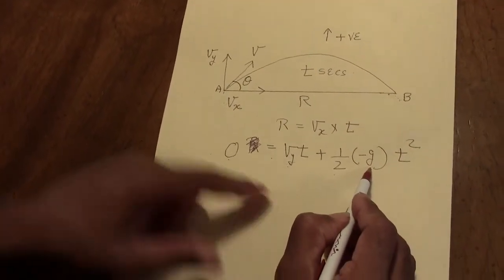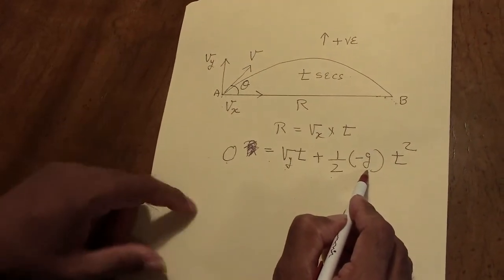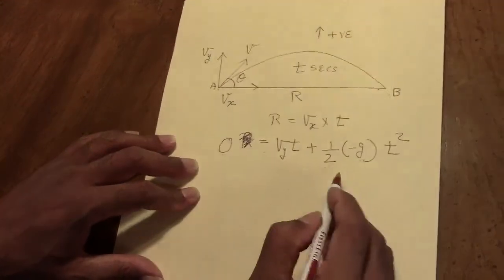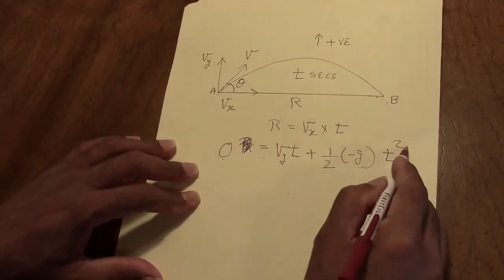We put g as negative because gravity is working in the downward direction, and that is considered negative from our supposition.